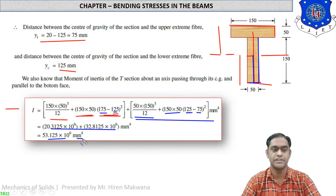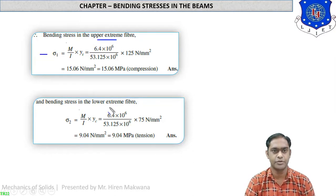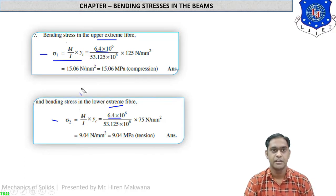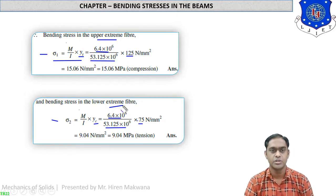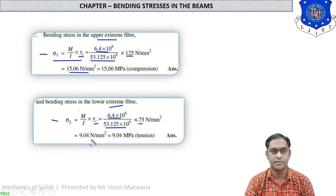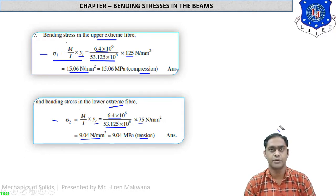This calculation is quite involved, so practice in your notebooks. Now, for the bending stresses: σ₁ (upper extreme fiber) and σ₂ (lower extreme fiber) use the formula σ = (M/I) × y. Moment M = 6.4 × 10⁶ N·mm and I = 53.125 × 10⁶ mm⁴ for both. Applying yt = 75 mm for σ₁ and yc = 125 mm for σ₂ gives σ₁ = 9.04 N/mm² (compression) and σ₂ = 15.06 N/mm² (tension).